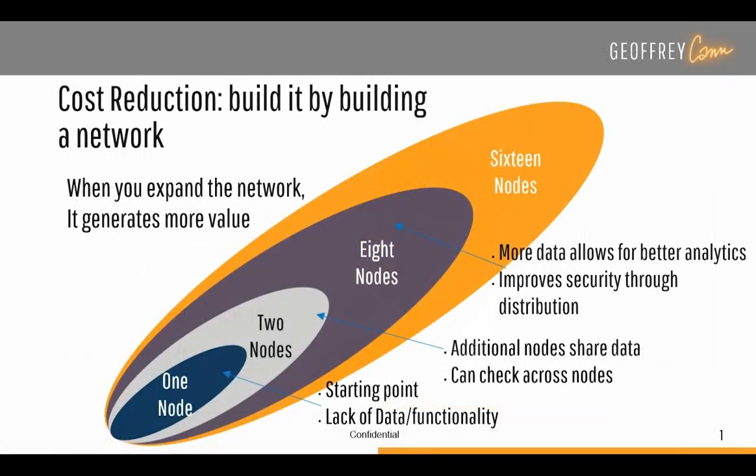Blockchain works best when there are a lot of nodes — a lot of participants in the system. Having a blockchain-based business model with nobody else to transact with is like having a Facebook page with no friends: it's pointless. You want to get as many companies as you can involved in your structure. The most successful blockchain structures have many participant companies in their nodes, and the bigger the nodes and the more structures you have, the greater the technology cost reductions.